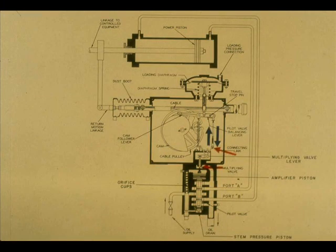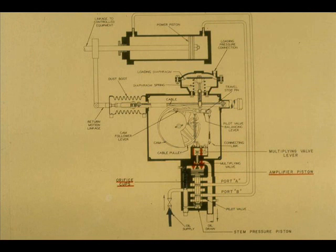As the connecting link raises and lowers, the multiplying valve operating lever raises and lowers the multiplying valve stem. A portion of the oil supply goes through the orifice cups. This is equivalent to the restriction orifice in a pneumatic relay. The reduced supply pressure acts upon the amplifier piston.